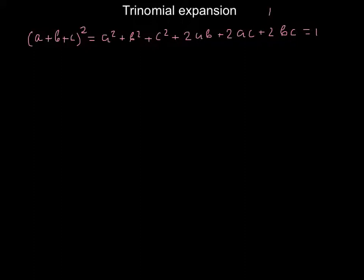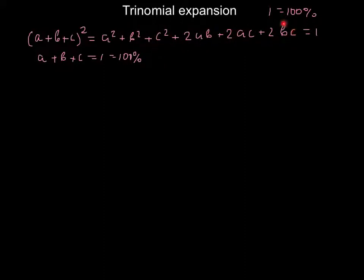And as you remember, 1 equals 100%. Also, all the alleles A plus all the alleles B plus all the alleles C would equal 100%. When we have three alleles like in this example, we would have not three genotypes as with two alleles, but six genotypes. With three alleles we can get six genotypes.